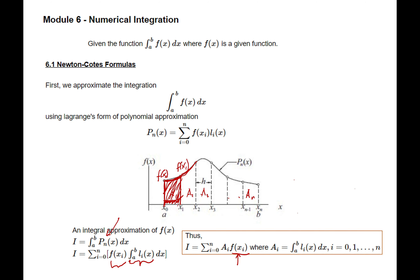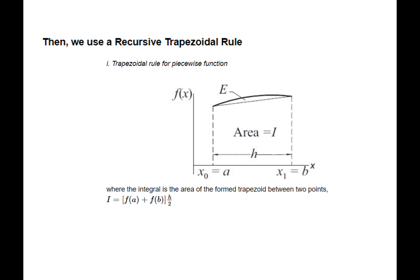Now, we use a recursive trapezoidal rule. The previous expression is still analytical because we cannot express the integral numerically as-is. So we use the trapezoidal rule. For one area from A to B, instead of a curve, we approximate with a trapezoid. Getting that area is straightforward using the formula. This one here is the function at A, and this one is the function at B.